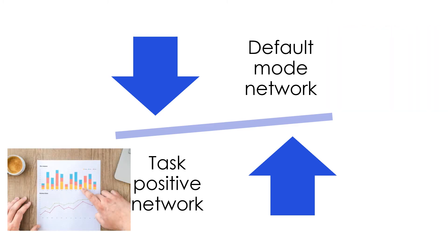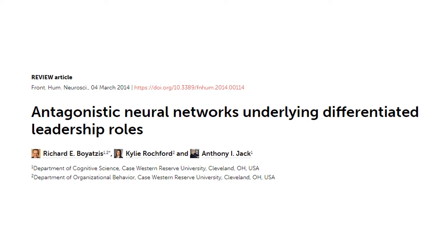By contrast, the task-positive network is activated when we perform tasks that demand logical reasoning and causal reasoning. As we fixate our attention on achieving a goal, we tend to be deliberate, analytical, and conduct a cost-benefit analysis — which includes underestimating the cost of using deception as a means to an end. Given the antagonistic relationship between the default mode network and task-positive network, this trade-off suggests a neural constraint for school leaders who cannot be both genuinely empathetic and analytic at the same time.